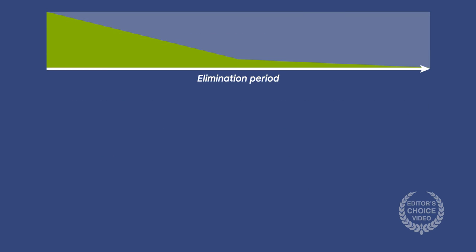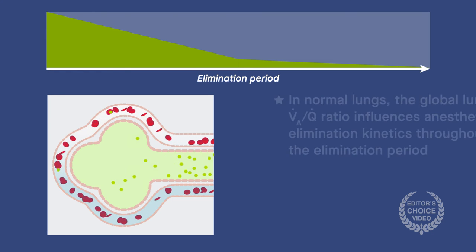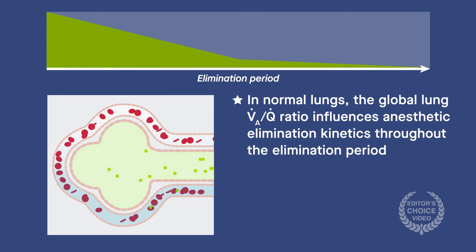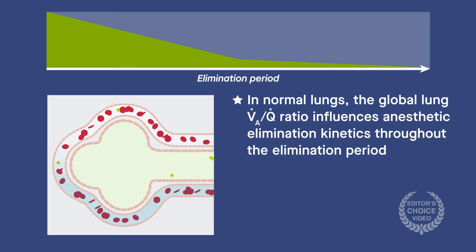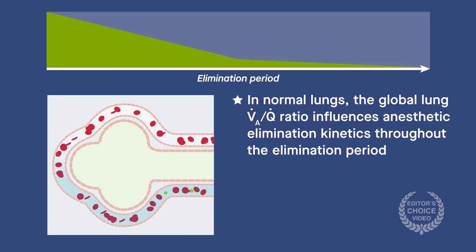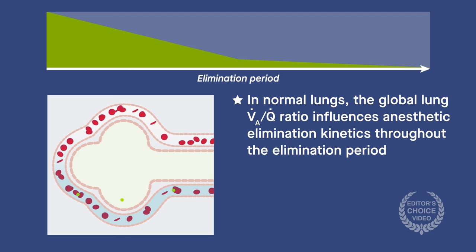Although the real-world situation is undoubtedly more complex, this analysis reveals the importance of the lungs at all stages of anesthetic washout, and highlights the effects of ventilation, perfusion, and drug solubility on elimination kinetics.